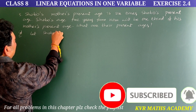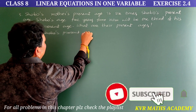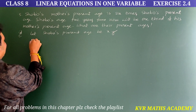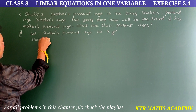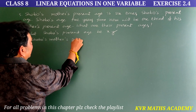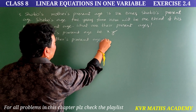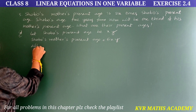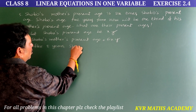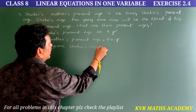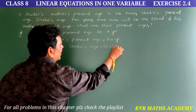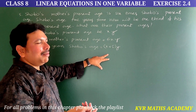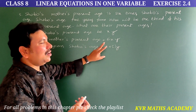Solution: Let Shobo's present age be X years. Next, Shobo's mother's present age is equal to six X years. After five years, Shobo's age is equal to X plus five years. After five years, Shobo's age will be one third of his mother's present age.